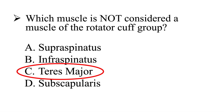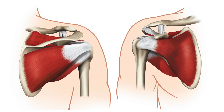So the answer here is teres major — this is not a part of the rotator cuff muscle group. It should be teres minor. Teres major works with the latissimus dorsi; they are synergists together, so don't get that confused. Make sure that you know that teres minor is part of the rotator cuff muscles. On the anterior aspect of the scapula, we have the subscapularis — 'sub' meaning underneath the scapula.